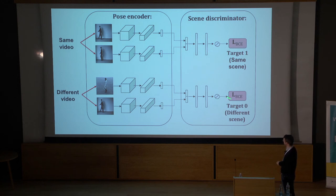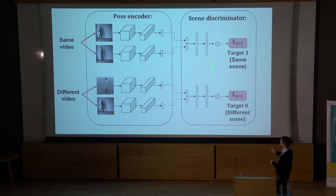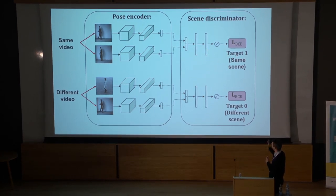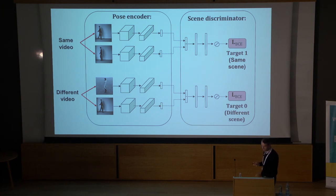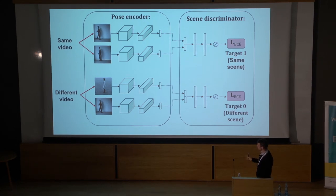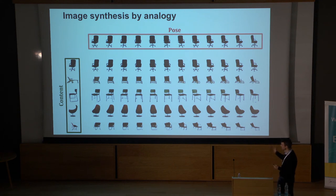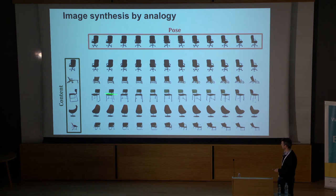How to induce this factorization: the pose representation, if carrying only pose information, shouldn't be able to distinguish which video clip it came from. We operationalize this using an adversarial objective — a discriminator tries to say whether a pair of frames came from the same or different videos, while the pose encoder is trained to maximally confuse the discriminator. On toy data, you get quite nice factorizations of content and pose. You can take the content representation from one image and the pose representation from another to synthesize new views — for example, different viewpoints of a rendered chair never seen during training.